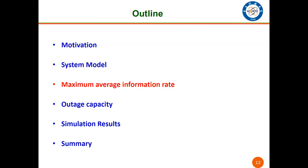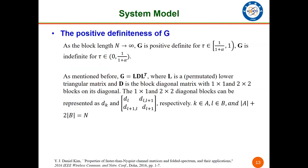In the next part, we obtain the optimal power allocation by maximizing the average information rate. Before the problem formulation, it's necessary to discuss the positive definiteness of G. As block length N goes to infinity, G is positive definite for tau in 1 over 1 plus alpha to 1. G may be indefinite for tau in 0 to 1 over 1 plus alpha.